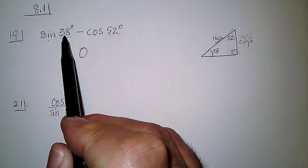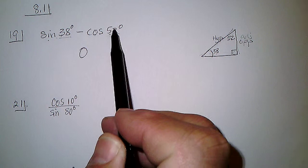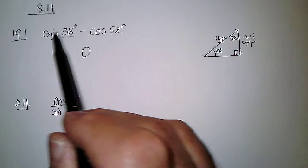So the idea here is the sine of an angle is equal to the cosine of its complement, or vice versa, the cosine of an angle is equal to the sine of its complement.